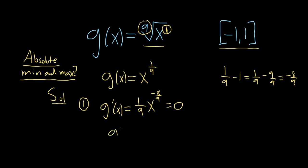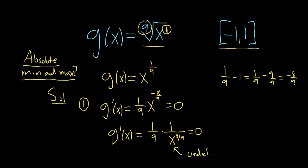Let's rewrite this as g prime of x equals 1 over 9, and then you can bring that x downstairs to make the exponent positive — so x to the 8 ninths — and this is equal to 0. Notice that the derivative is undefined at x equals 0.